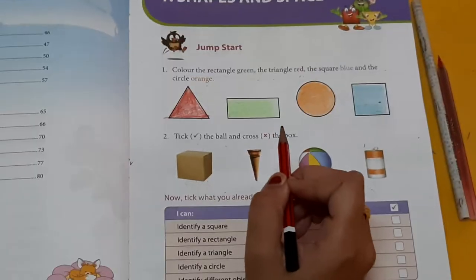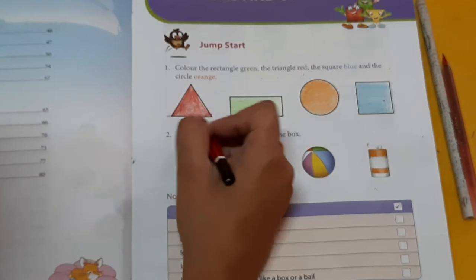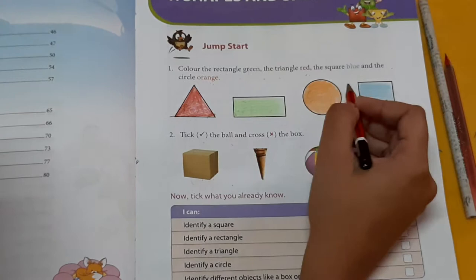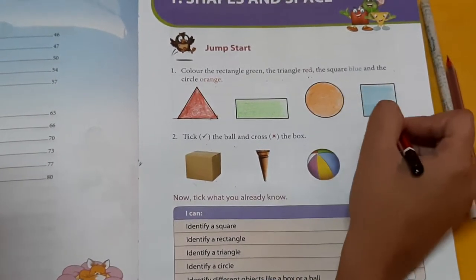Now, already I have colored it for you. Triangle red, rectangle green, circle orange, square blue.